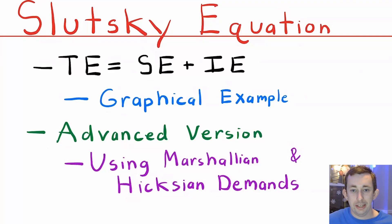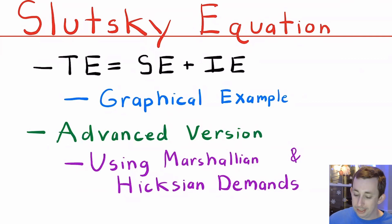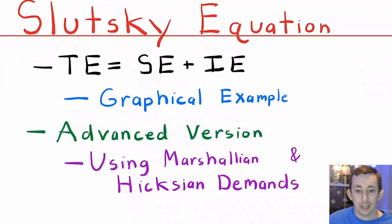Hi guys, welcome back to a Case of Econ Struggles. Today we're talking about the Slutsky equation, which is: total effect equals substitution effect plus the income effect. I think the best way to explain this is with a graphical example that we'll walk through slowly, and then we will talk about a more advanced version using Marshallian and Hicksian demands.